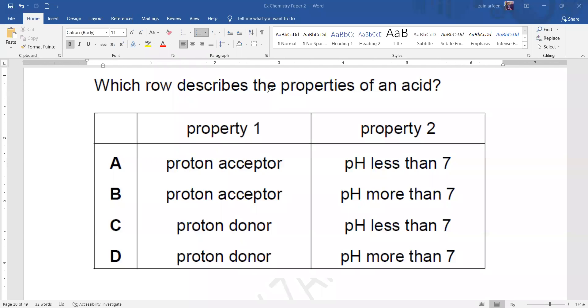Acids are proton donors. Any substance that donates protons. So it means option A and B cannot be acids because it's written proton acceptor. So proton donor is either C or D.